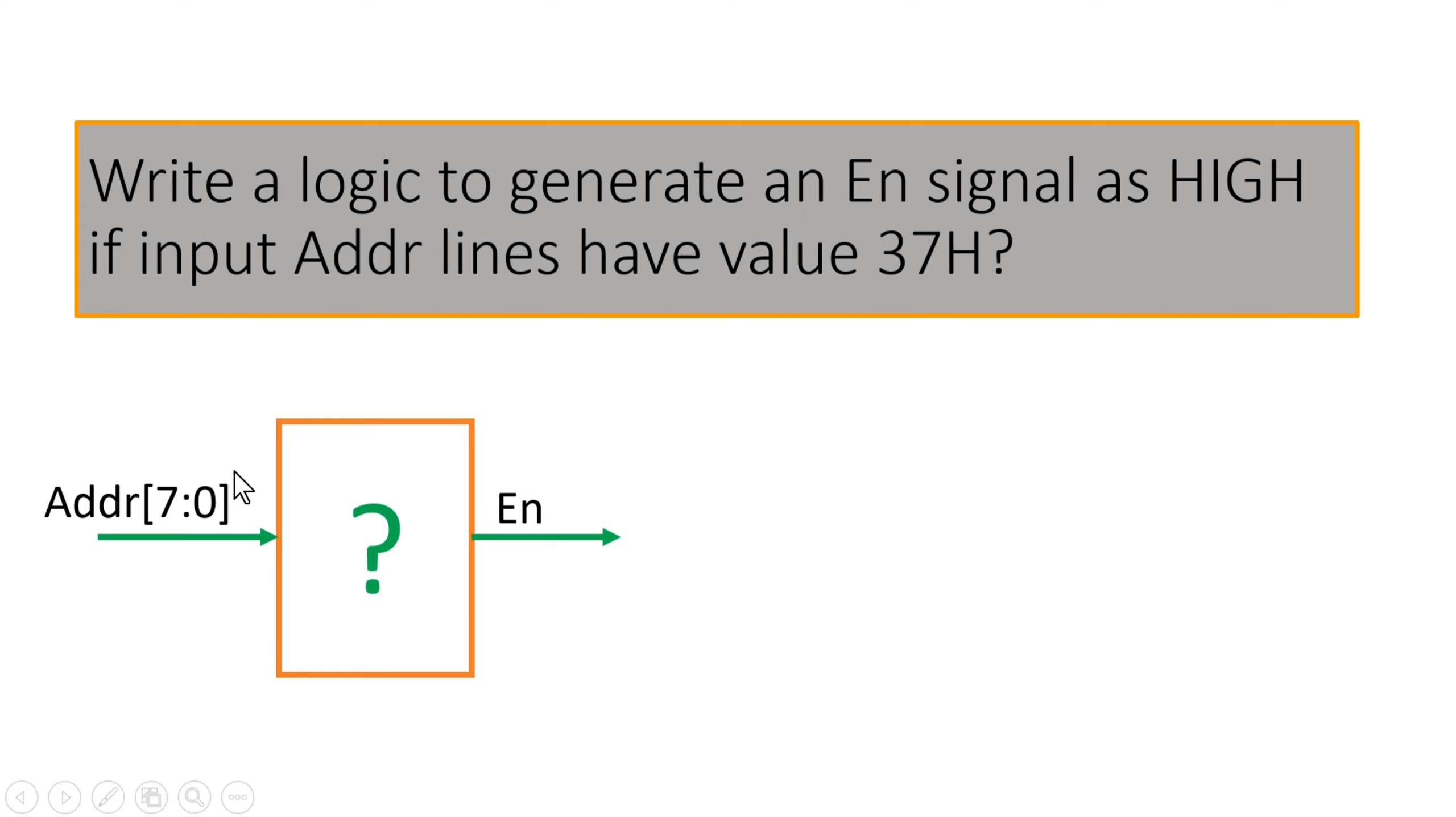whenever on these address lines the value is 37H, this enable signal should go HIGH, and this is combinational logic. Friends, you can pause the video here and try by yourself, otherwise let me tell you the answer.